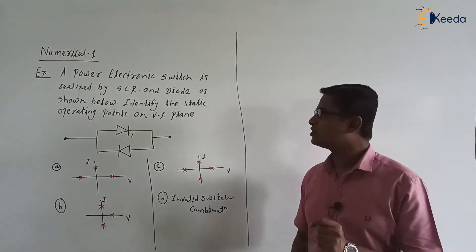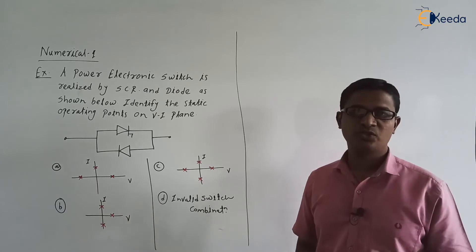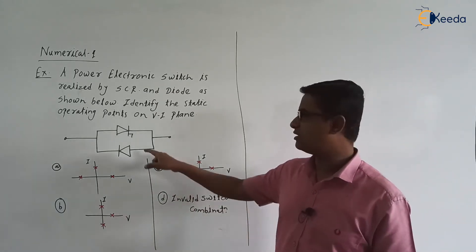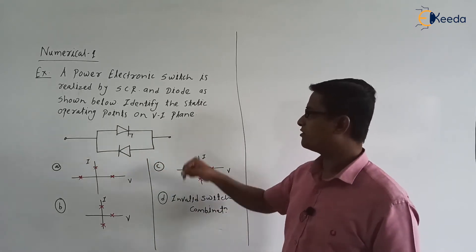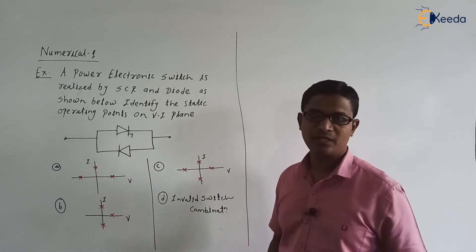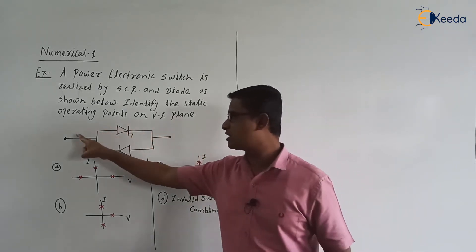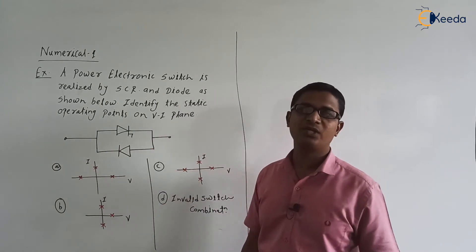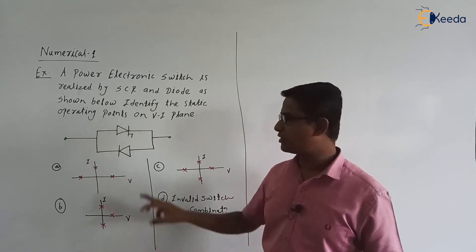A power electronic switch is realized by SCR and diode as shown in the figure. The SCR is connected in anti-parallel with a diode. We need to identify the switch and identify the static operating points on the VI plane. We need to consider this as a single switch and identify the static operating points on the VI plane for this switch.